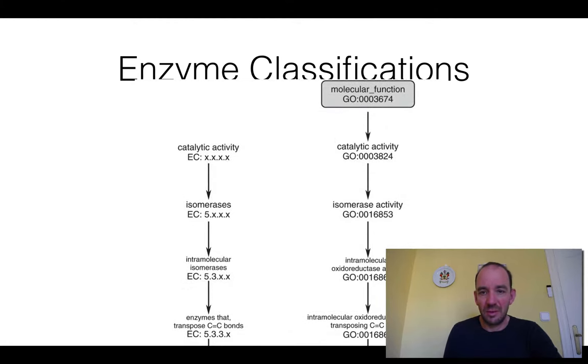Nowadays EC has been replaced as part of GO, the Gene Ontology classification, which we'll discuss more later. For example, you have catalytic activity - isomerase has an EC number of 5 - and then you have a GO term number. Intramolecular isomerase is a subset, and these are integrated in the EC classification databases.